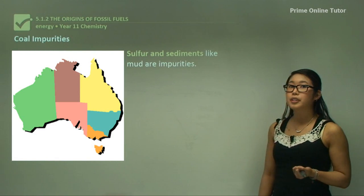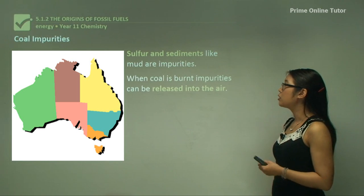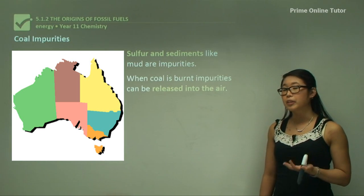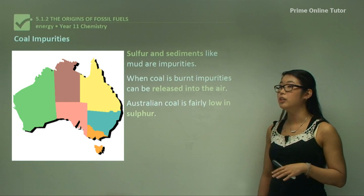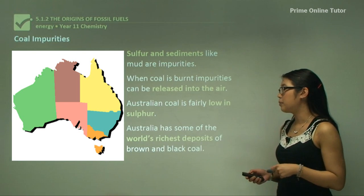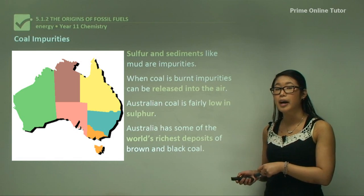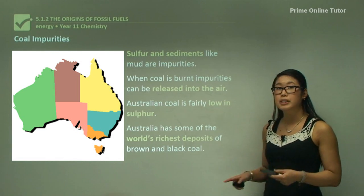Coal impurities include sulfur and sediments like mud. When coal is burnt these impurities can be released into the air. Australian coal is fairly low in sulfur which is great. Australia also has some of the world's richest deposits of brown and black coal.